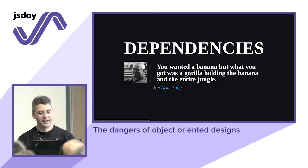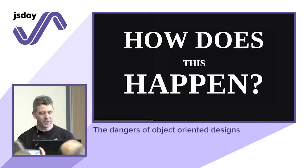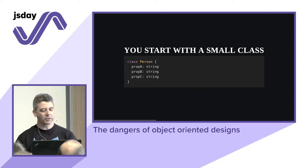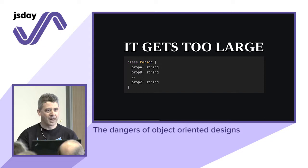About dependencies: Joe Armstrong, the creator of Erlang, said — 'You wanted a banana, but what you got was a gorilla holding the banana and the entire jungle.' How does this happen? You start with a small class — a Person with a few properties. It's small, it has state.